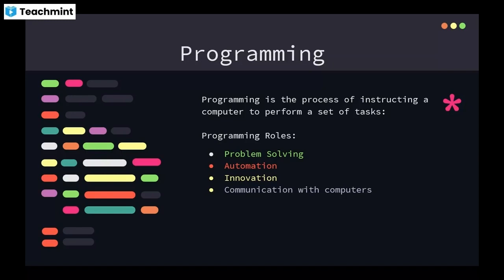In problem solving, programming allows developers to break down complex problems into smaller, manageable tasks that the computer can understand and execute. In automation, developers can automate processes, saving time and reducing errors — for example, data entry, emails, and file management. Previously, users used to do these tasks manually, but now everything has got automated using AI tools.